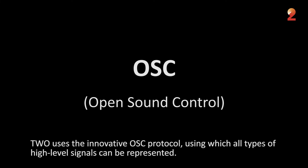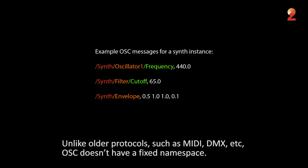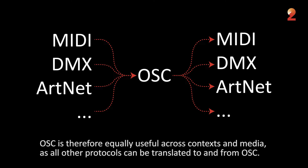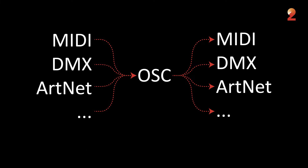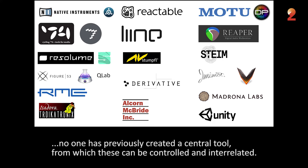TU uses an innovative OSC protocol, using which all types of high-level signals can be represented. A namespace is the entire set of signals a device can transmit and receive. Unlike older protocols such as MIDI, DMX, etc., OSC doesn't have a fixed namespace. OSC is therefore equally useful across contexts and media, as all other protocols can be translated to and from OSC. Although there today is a large and growing ecosystem of tools which support OSC, no one has previously created a central tool from which these can be controlled and interrelated.